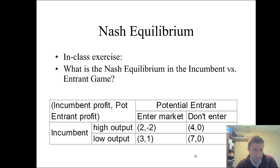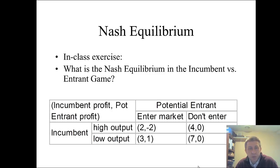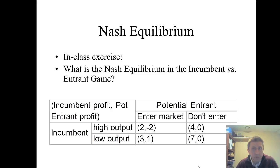Here's a class exercise I want you to work on and bring to class. Try to find the Nash equilibrium of the incumbent versus potential entrant game. The way I want you to find this is by looking at each of the four possible outcomes to see whether either player has an incentive to change their choice. If the answer is yes, it's not a Nash equilibrium. The equilibrium is the stable point where nobody wants to change.